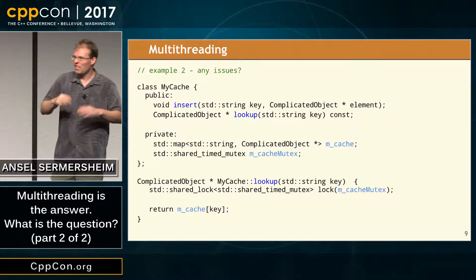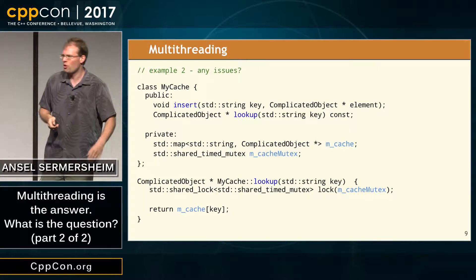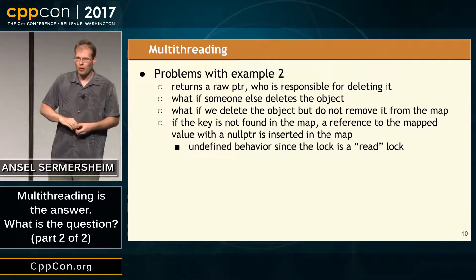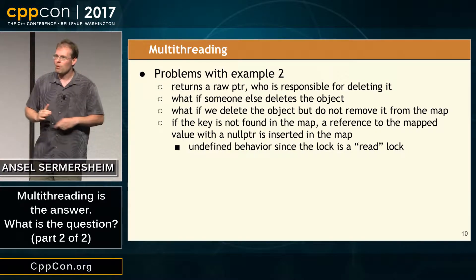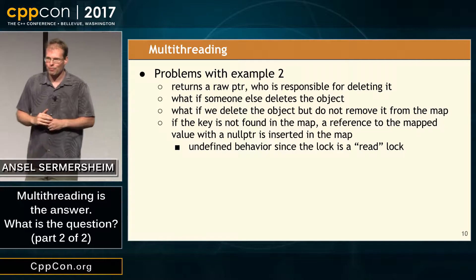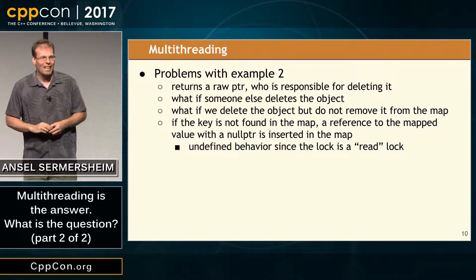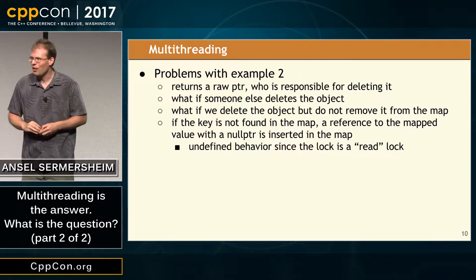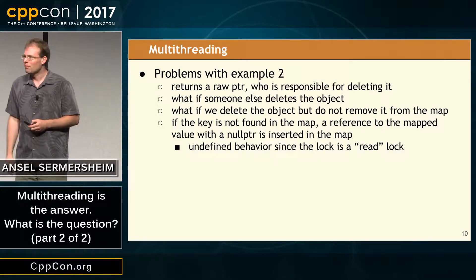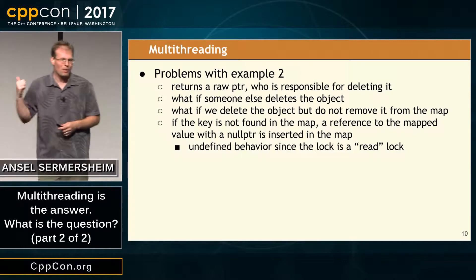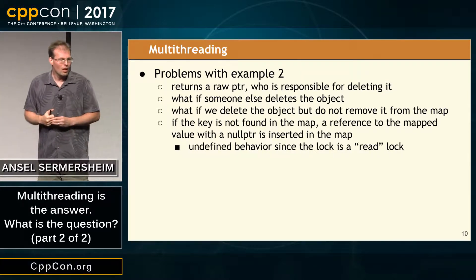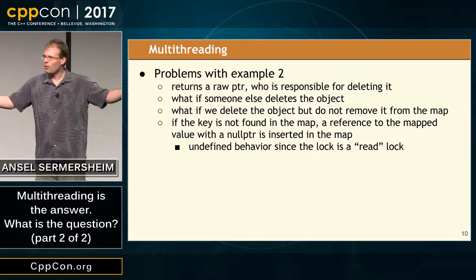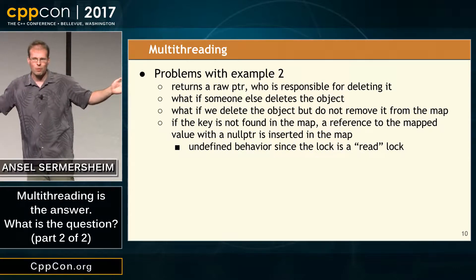We have problems with cleanup because we've got a raw pointer. We could use a shared pointer, but it's hard to review this code. I'm using a shared lock, but operator bracket is not const on a map — if the key isn't present, it inserts an empty entry. This is a write. We have a race condition: I'm writing to the map with a read lock held. This will corrupt the internal data structures and you will have a crash. This was hard to see — many people took time to spot it.